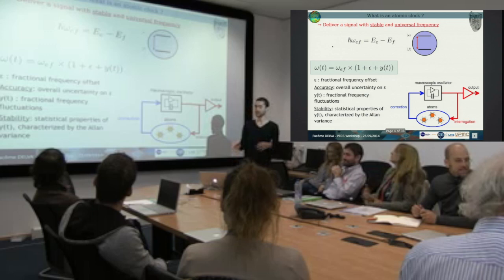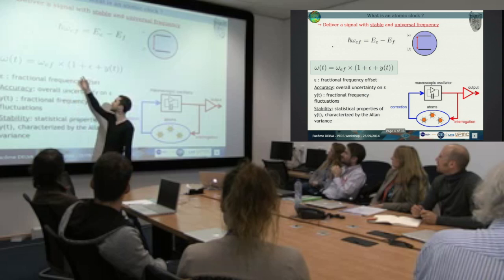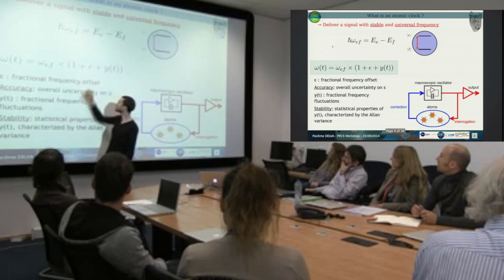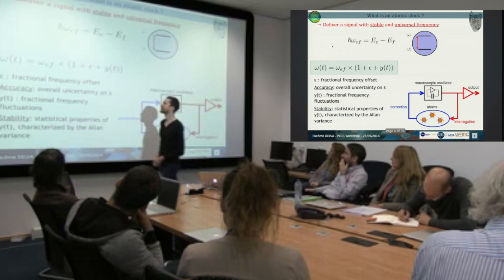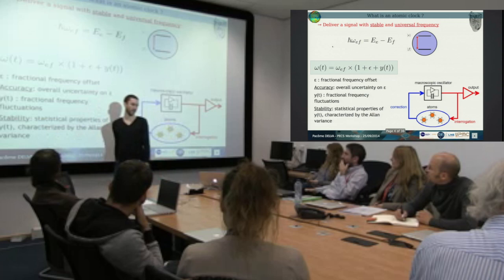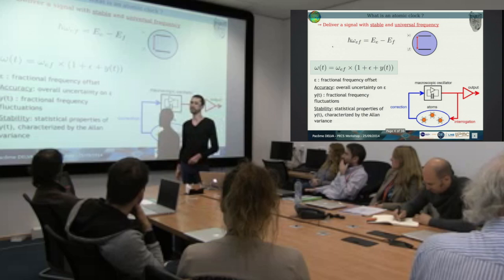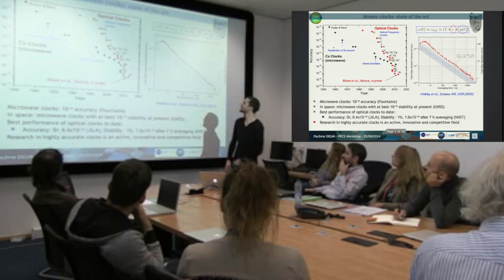Very quickly, what is a clock? It's how to measure a frequency. You interrogate some atoms and measure a frequency. But any measurement in physics is not perfect, so you don't measure the true frequency. You have some frequency offset — the bias — and some frequency fluctuations. So how do you characterize a clock? First, with the accuracy, meaning how far you are from the true frequency. And stability — how you can average the fluctuation with time. For this we use the Allan deviation.